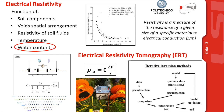Electrical resistivity is a measure of the resistance of a given size of a specific material to electrical conduction. We use it to monitor the subsoil because soil electrical resistivity is a function of soil components, presence of voids, resistivity of the circulating fluids, temperature, and especially water content. There is an inverse proportionality between water content and resistivity — as water content increases, resistivity decreases.